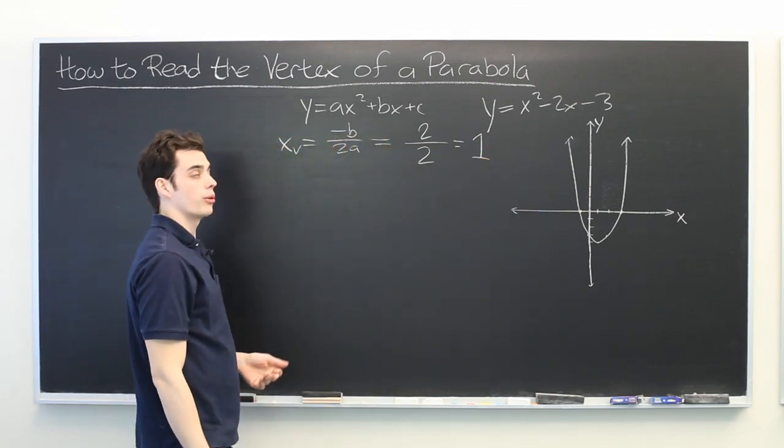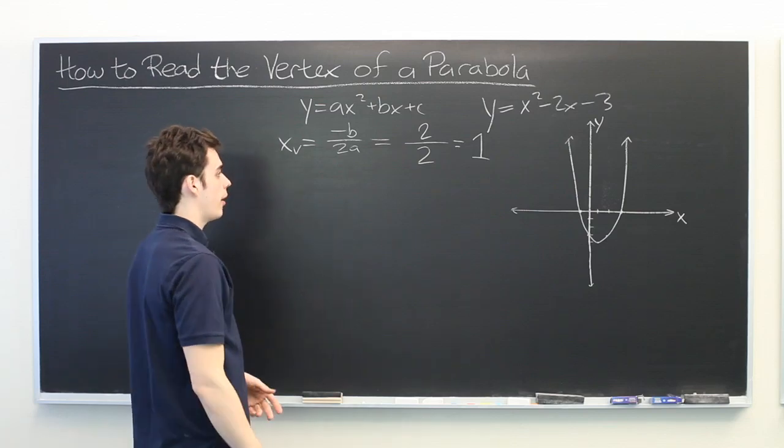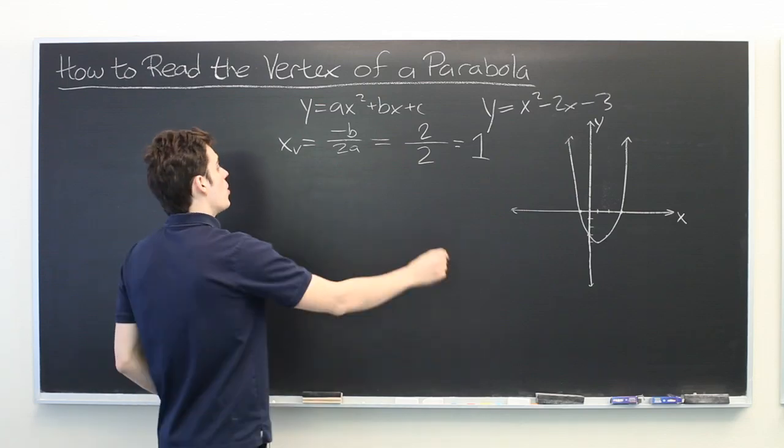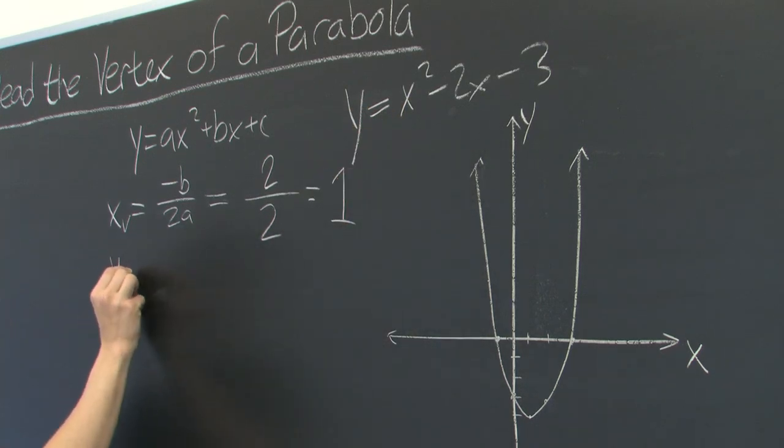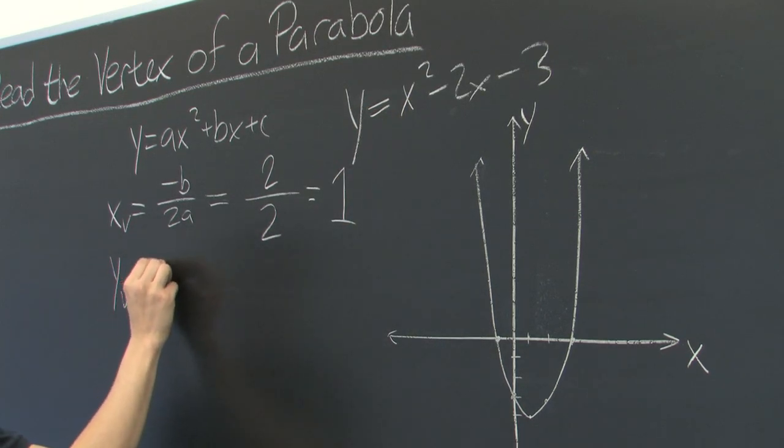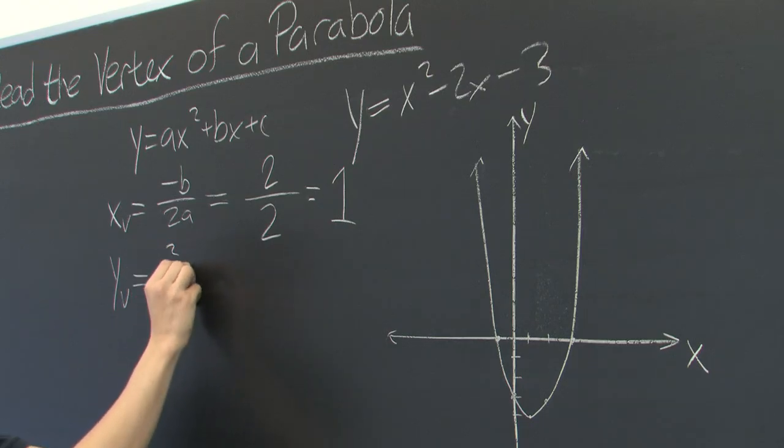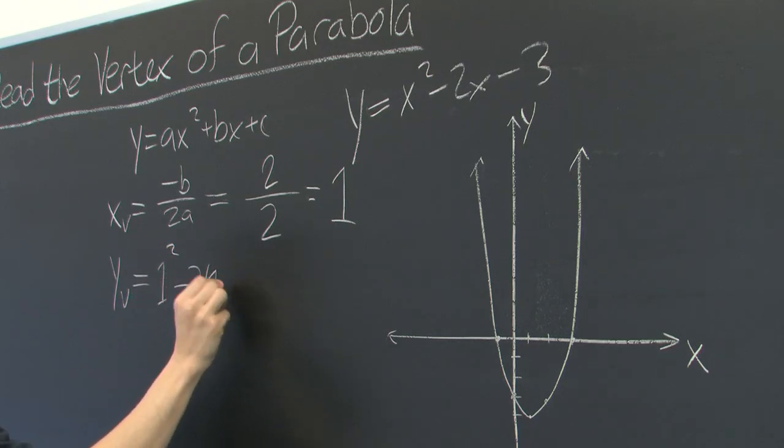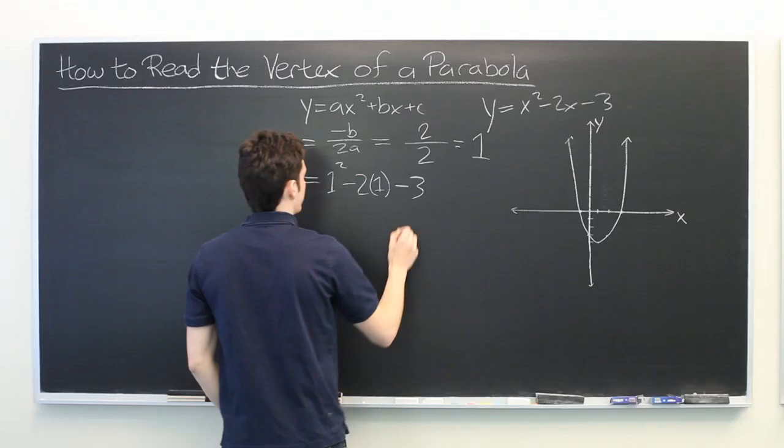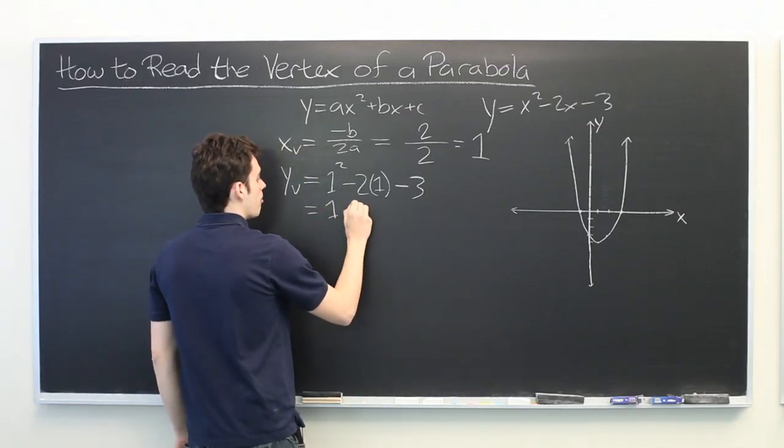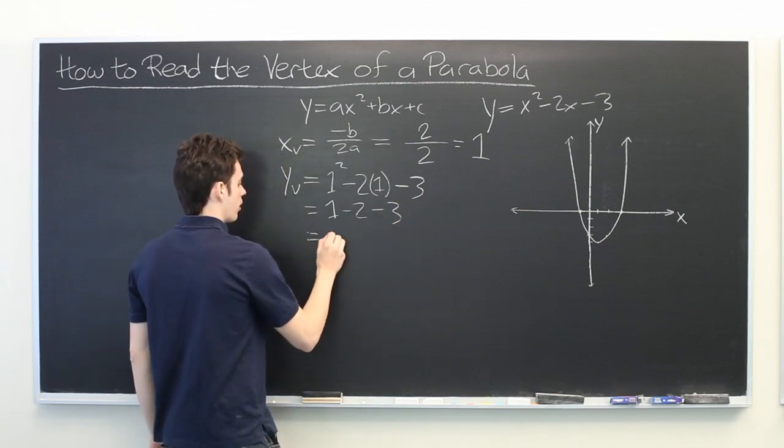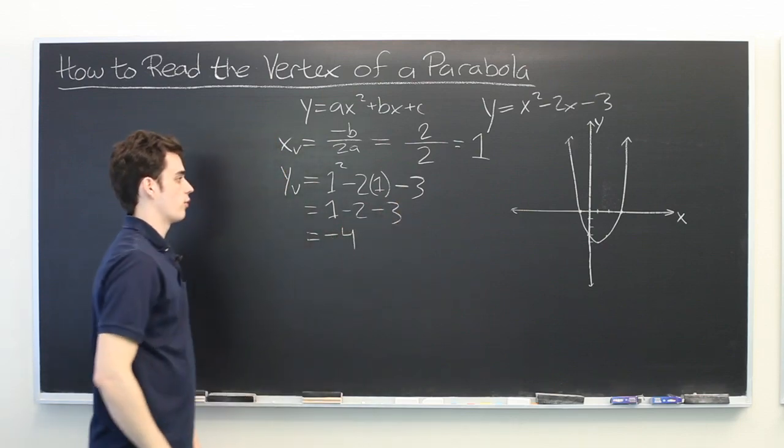So the x-coordinate of our vertex is 1, and in order to find the y-coordinate, we simply need to plug 1 into our original equation. yv is equal to 1 squared minus 2 times 1 minus 3, which equals negative 4.